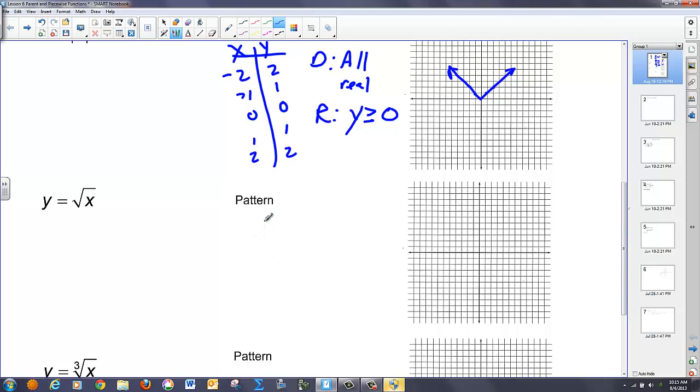Square root. We know that negative values are undefined in a square root, so we might as well not even plug those in. Start at 0, 1, and rather than picking 2, because I don't really know what the square root of 2 is, we've got to pick perfect squares. So we'll go 4 and 9. So I get 0, 1, 2, and 3 as my output values. So I get a slanted curve figure, something like this.